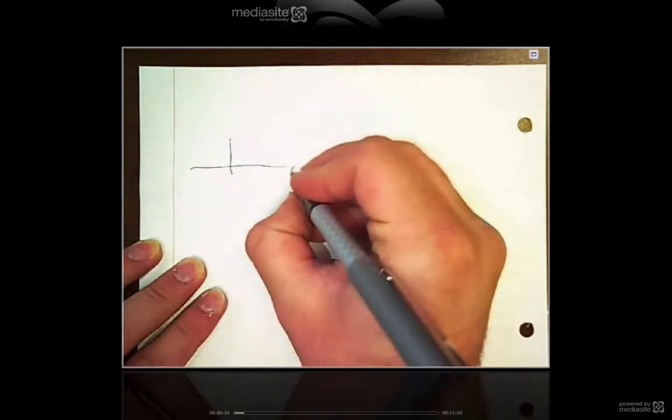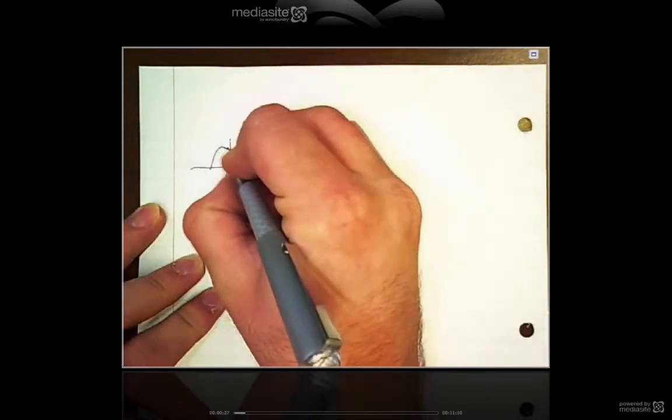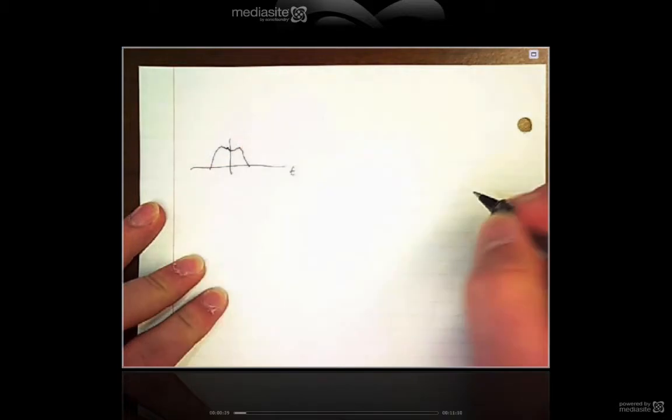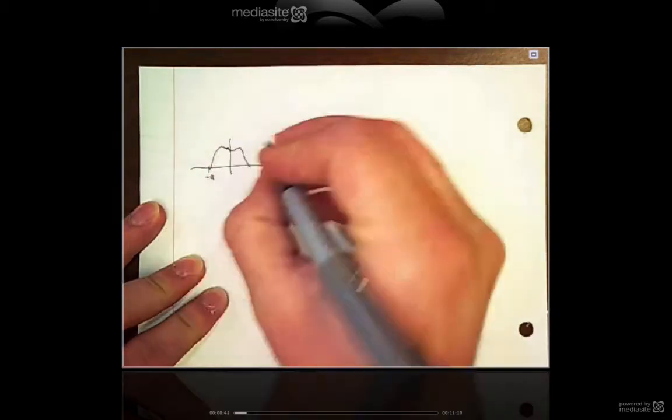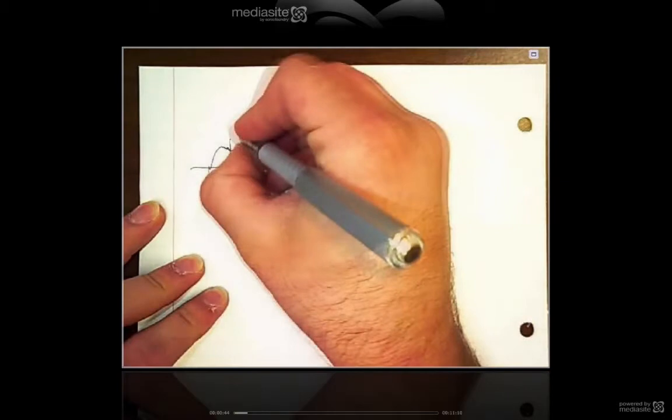For example, if you have this signal in the time domain, something random like that, between negative A and B - this is your X of T.